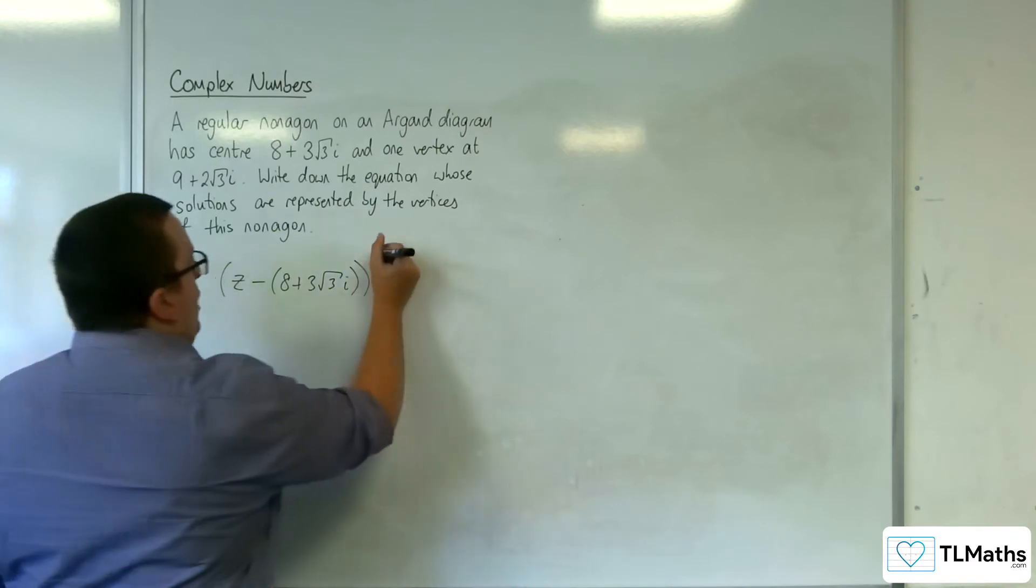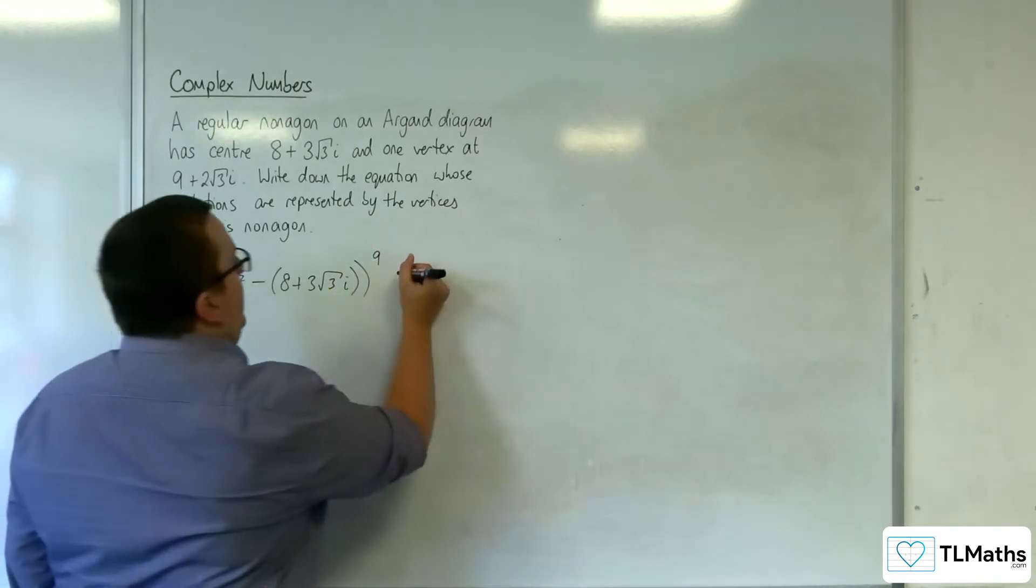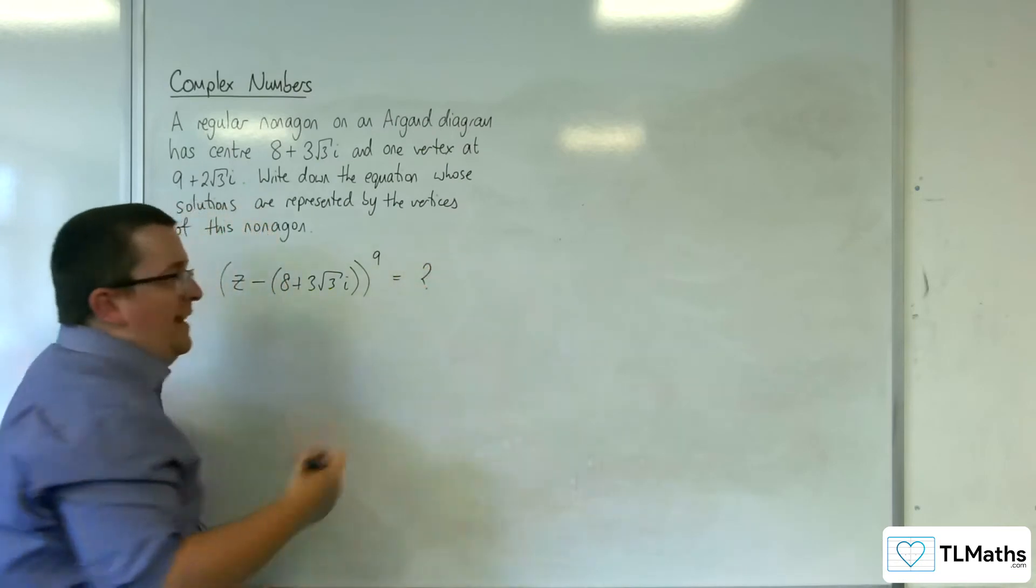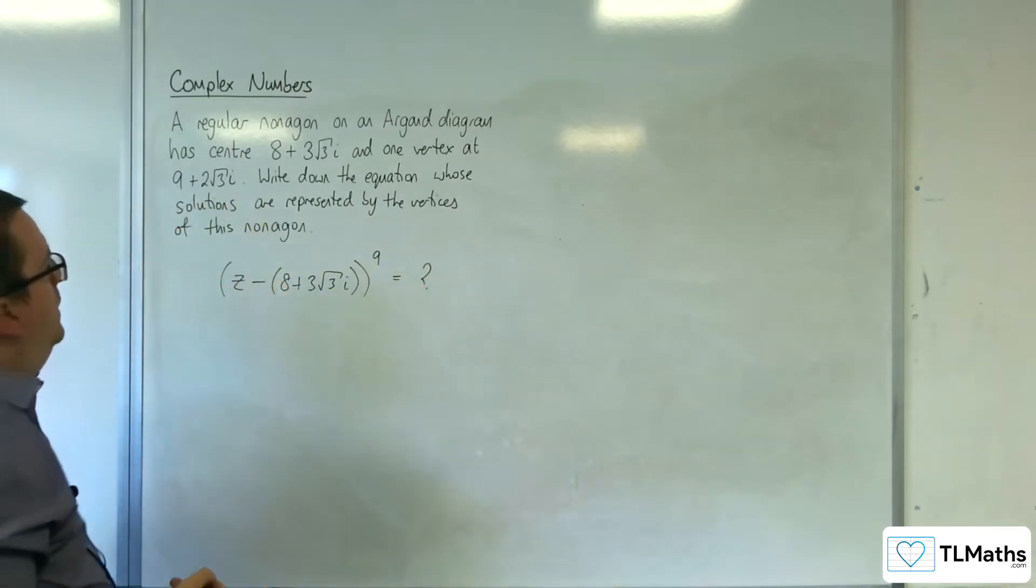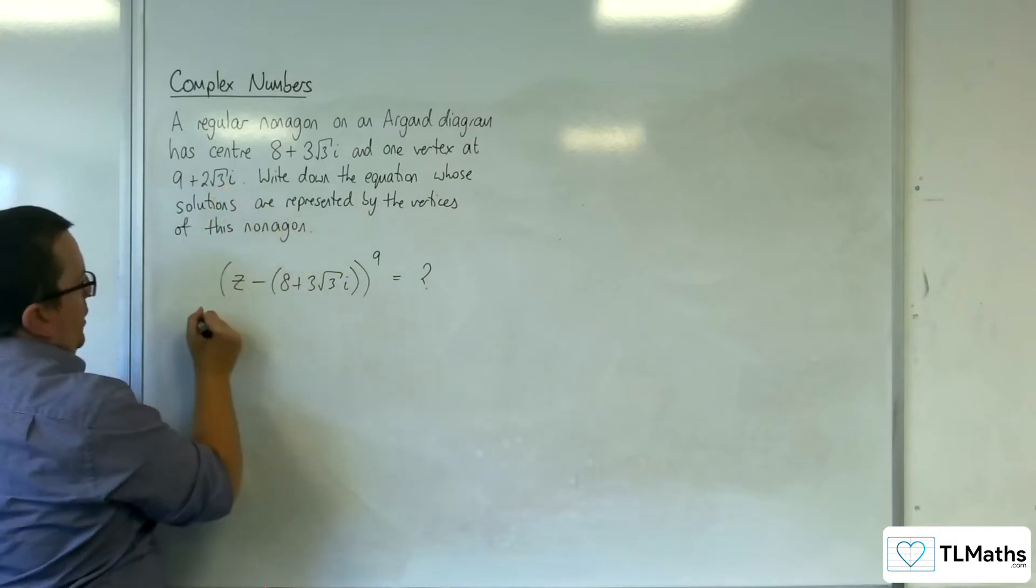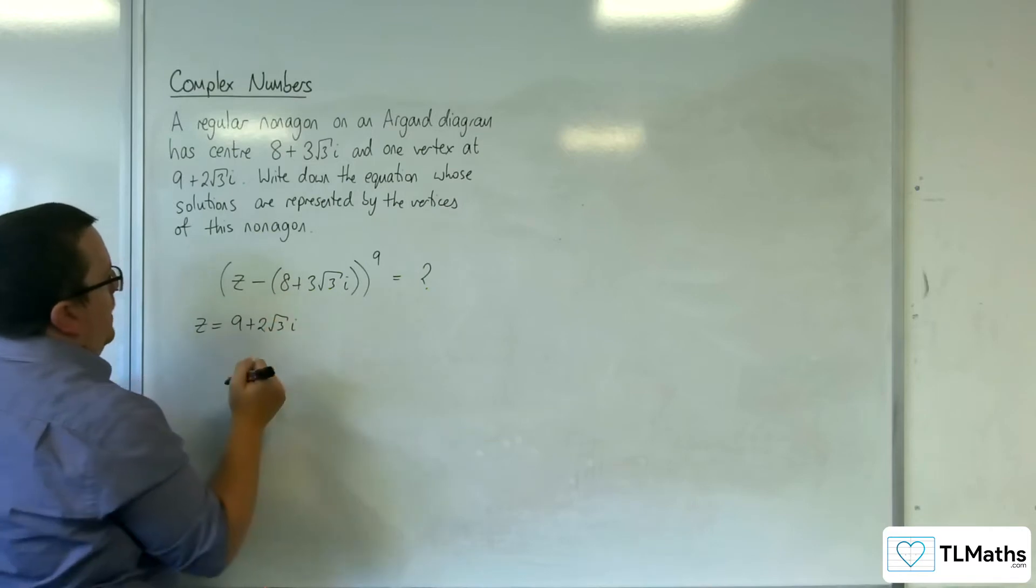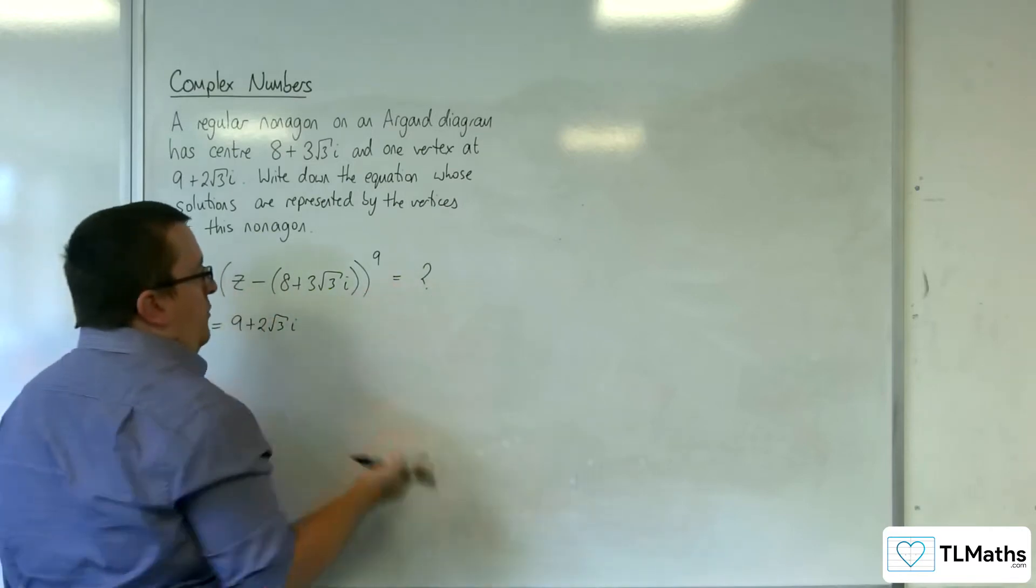We need this to the power of 9 in order to have a nonagon and that's going to be equal to something and I need to work out what that is. So I know that it goes through 9 + 2√3i, so when z is 9 + 2√3i, I can substitute that in and I get the right hand side.